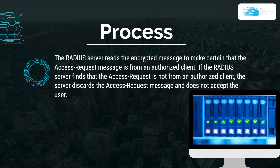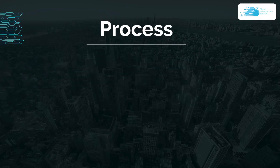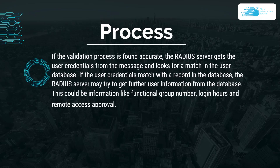If the RADIUS server finds that the access request is not from an authorized client, the server discards the access request message and does not accept the user at all. If the server finds the access request is from an authorized client and the shared secret is valid, the server reads the authentication method requested in the access request message.